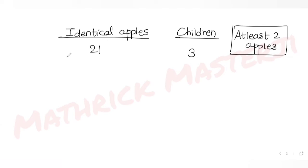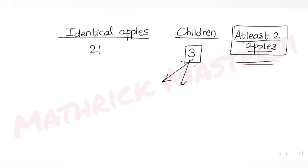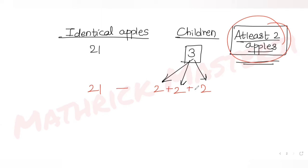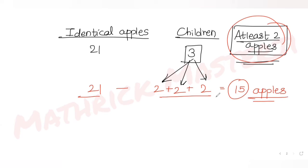To handle the condition of at least two apples, we first give two apples to each of the three children. That uses 2 + 2 + 2 = 6 apples. So out of 21, we give out 6, leaving 15 more apples to be distributed.